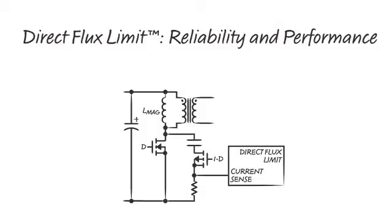The LTC3765-LTC3766 chipset features direct flux limit, which actually prevents transformer saturation. Direct flux limit works by directly sensing and limiting the magnetizing current in both directions.